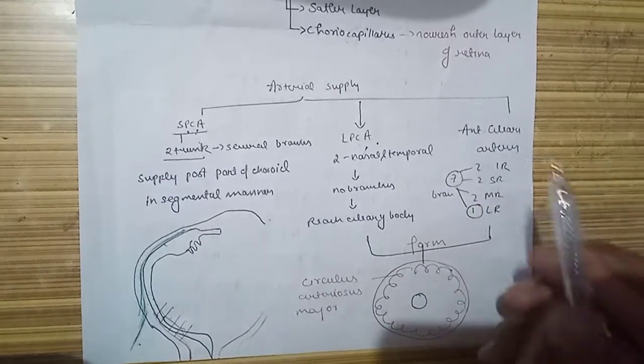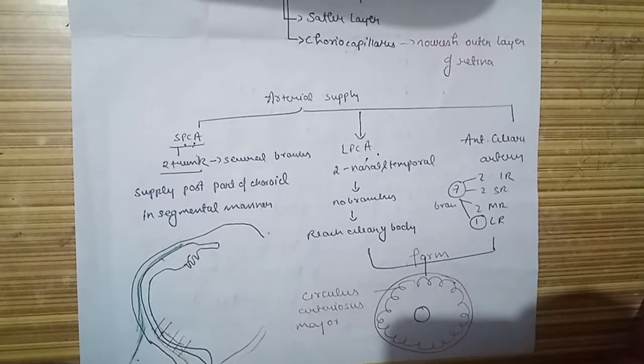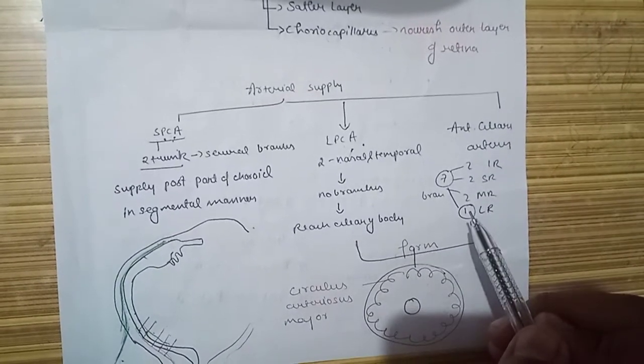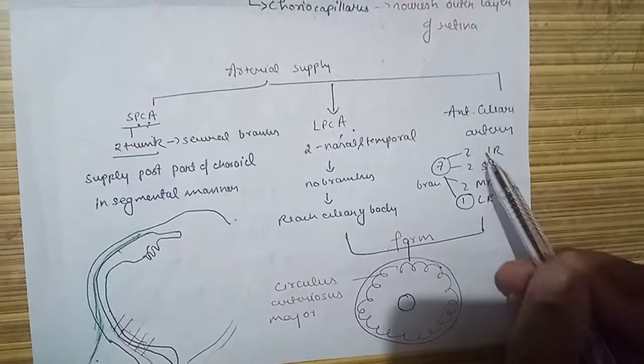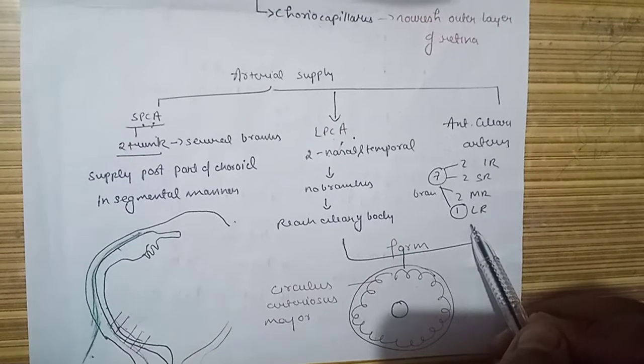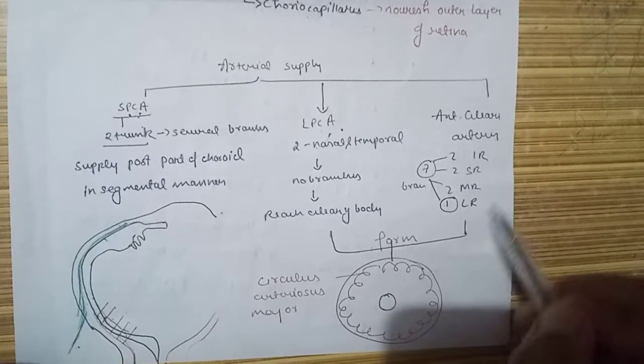The anterior ciliary arteries are derived from the muscular branches that arise from the ophthalmic artery. The ophthalmic artery gives several muscular branches: two from the inferior rectus, two from superior, two from medial, and only one branch from lateral rectus.